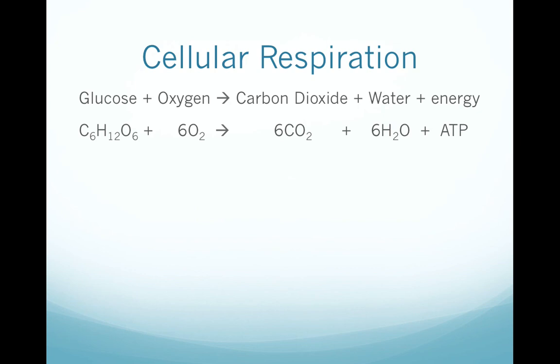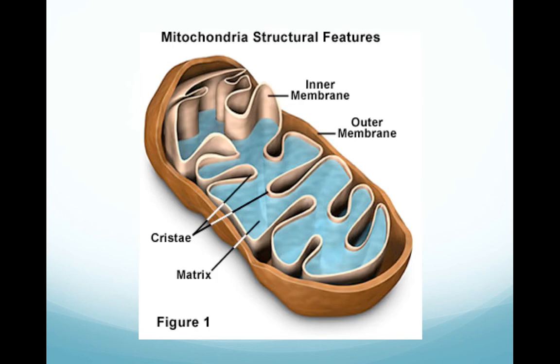Since the majority of this process takes place in the mitochondria, let's review that organelle. When referring to a single organelle it's called the mitochondrion, and the plural form is mitochondria. The mitochondria have two phospholipid bilayer membranes — the outer membrane surrounds the organelle, and the inner membrane is folded; these folds are termed cristae. The matrix is a semi-fluid material that fills the inner space. Part of cellular respiration takes place inside the matrix, and part takes place on the cristae on the inner membrane folds.